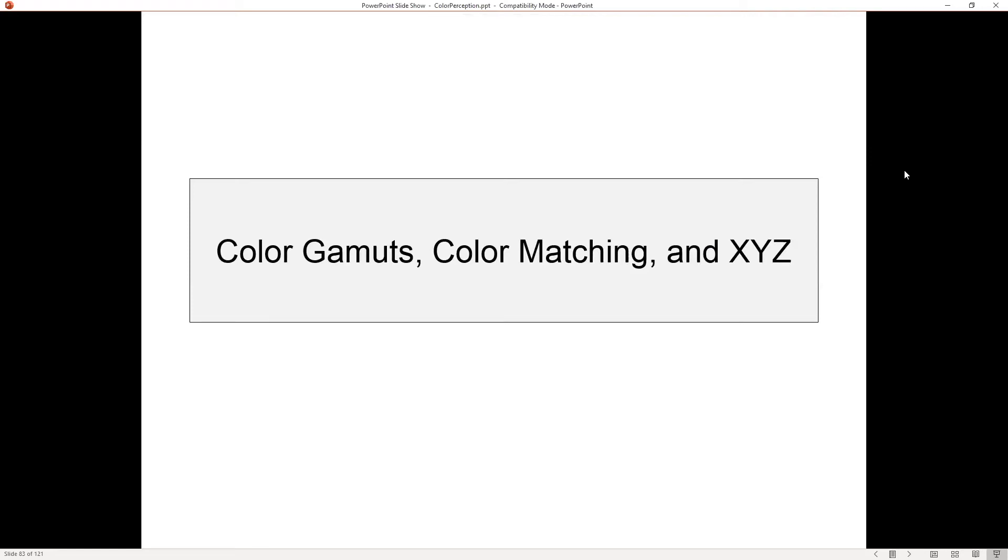Okay, now we're going to talk about what I think is, for many people, one of the most confusing parts of trying to think about color. I've added a bunch of slides this time, we'll see whether I made it more confusing or more intuitive. But we're going to talk about color gamuts, this color matching problem, and a space called XYZ. And I've tried to make it all come together.